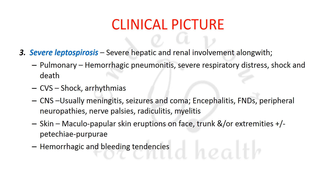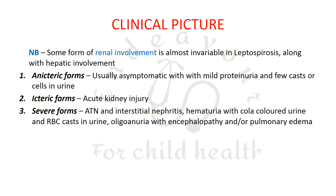To summarize the clinical stages: anicteric hepatitis presents simply like a common viral illness; icteric hepatitis adds AKI and jaundice to those features; and severe leptospirosis involves AKI, jaundice, and multi-organ dysfunction. Some form of renal involvement is almost invariable in leptospirosis of any kind, along with hepatic involvement.